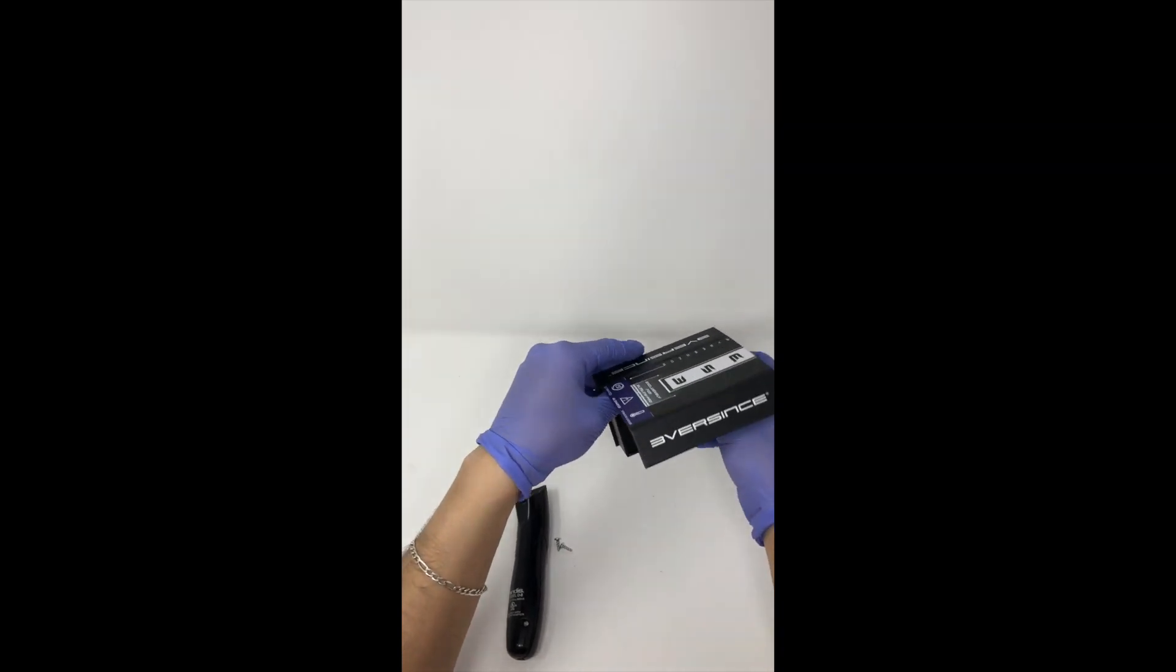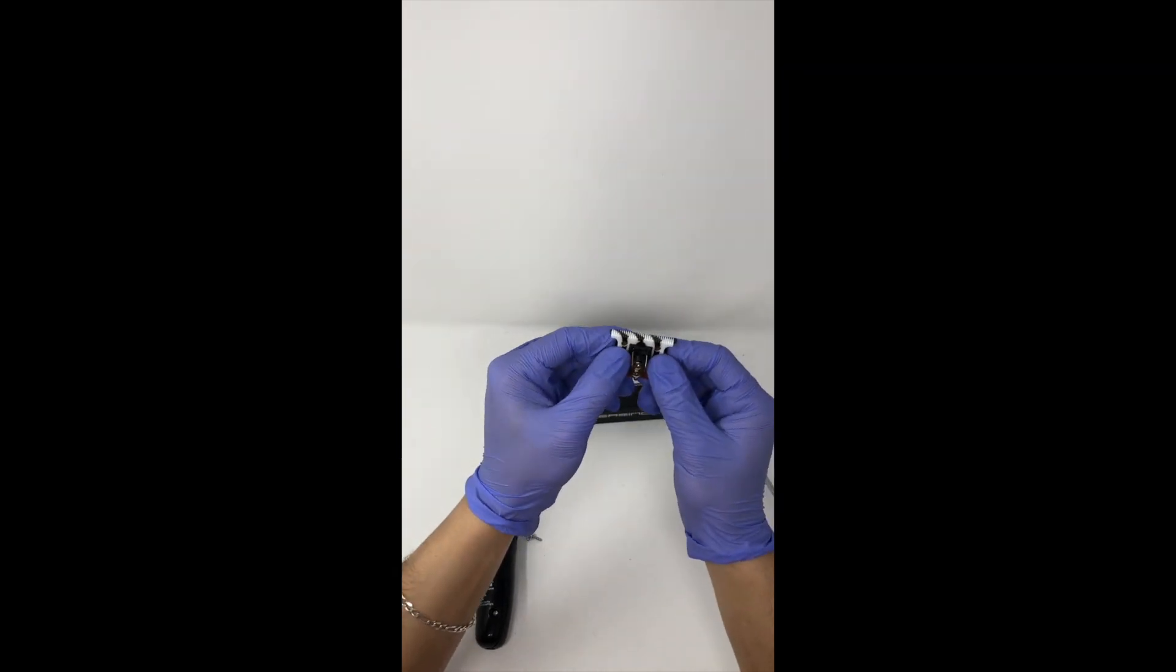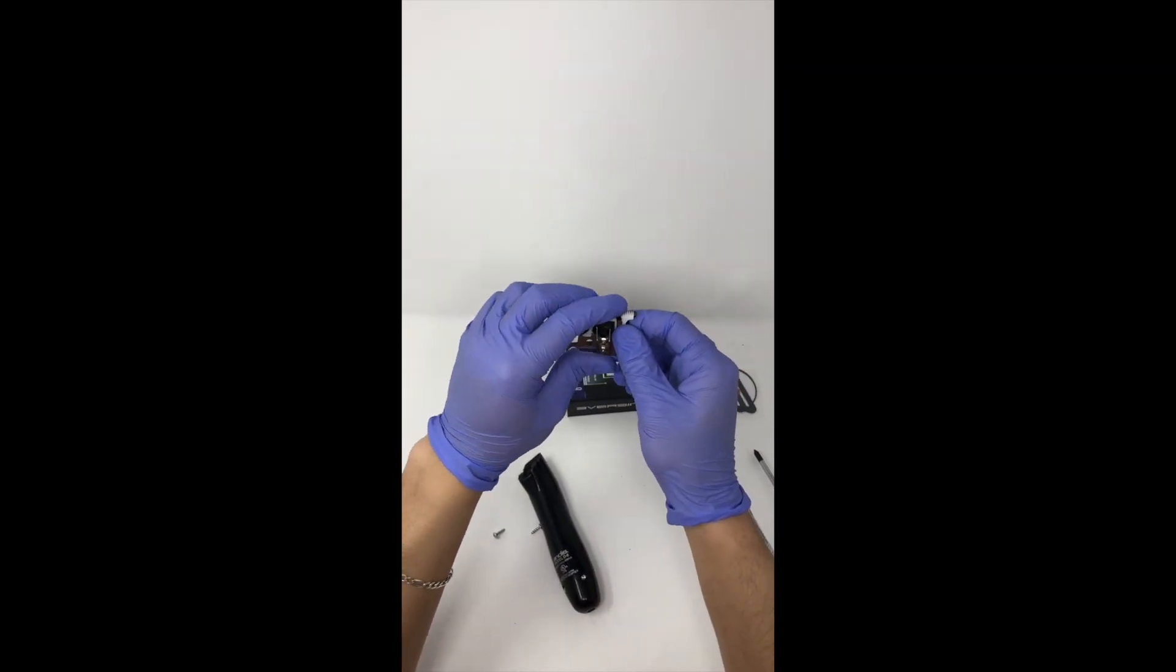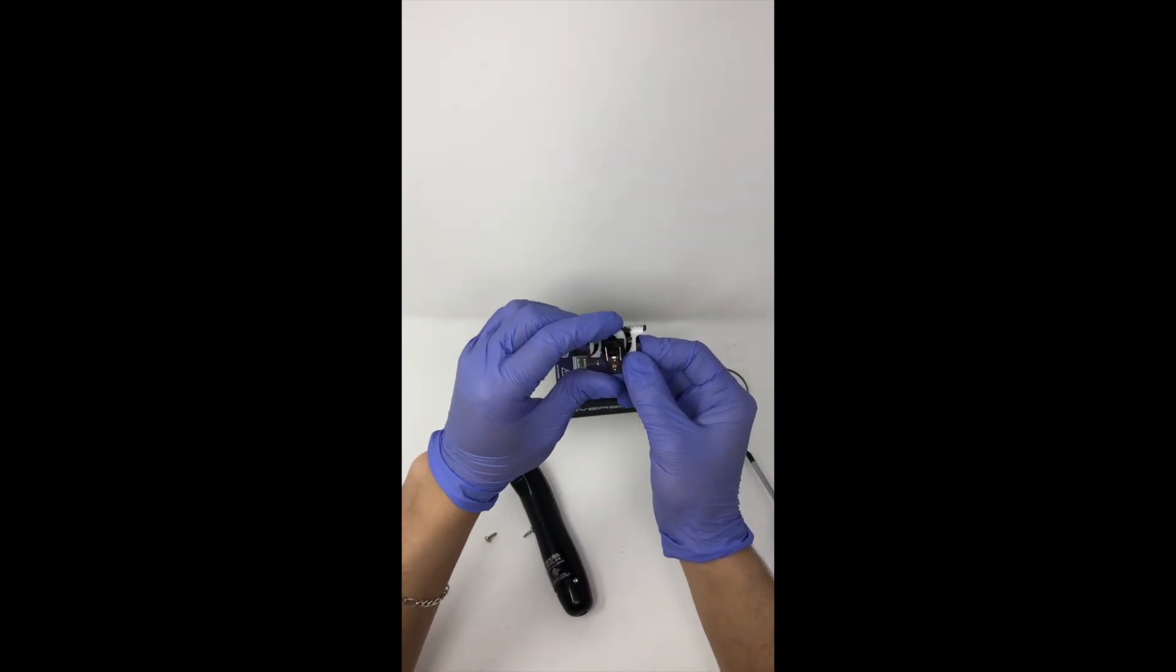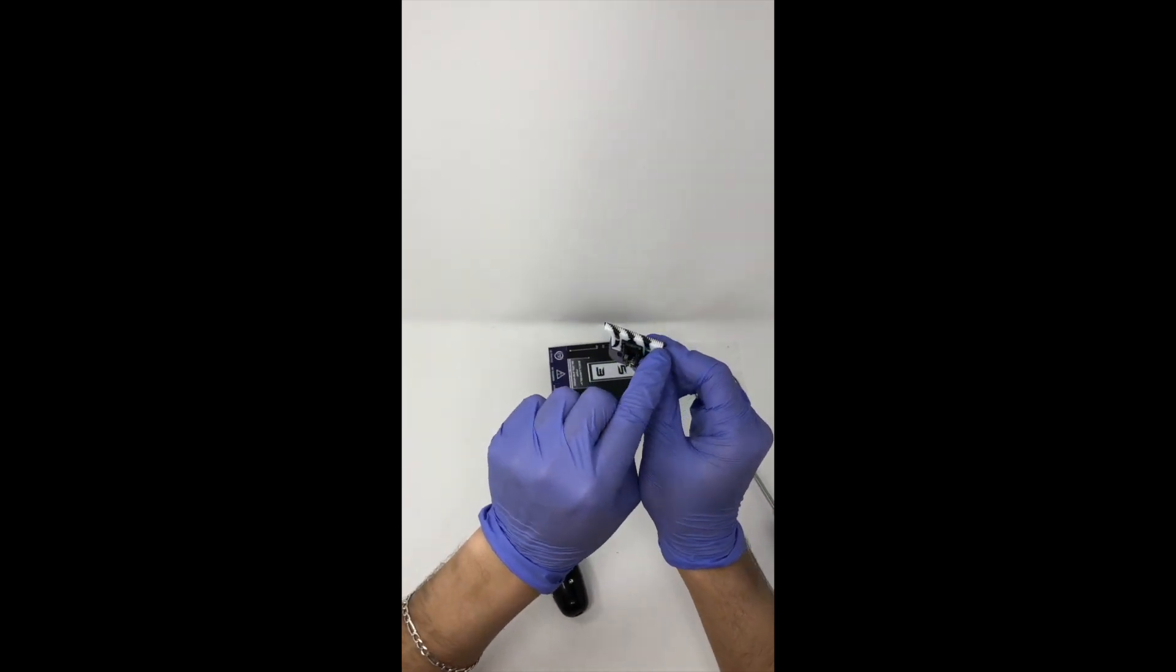Remove the blade from the box. Before placing it on the trimmer, make sure the blade is truly zero gap and not overbiting or overlapping. Make sure both blades are at exactly the same level.